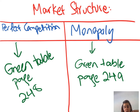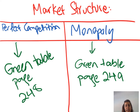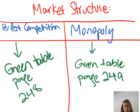I will talk about the differences between Perfect Competition and Monopoly. We will be talking about the features that each one of them has. We have a green table in your book. We will explain it right now on the PowerPoint. Please open your books to page 248 and 249.